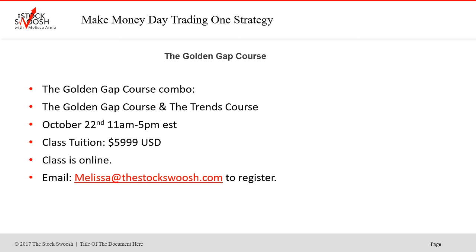The Golden Gap and Trends Together combo is $5,999 — you save $500. That class is October 22nd from 11 to 5. Email me if you want to sign up, have questions, or want to visit the trading room this week before the class. This was a great example of how I read the price action before the news broke. Good luck everyone this week and have a great trading week. Thank you.